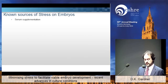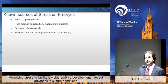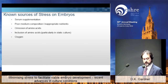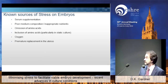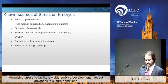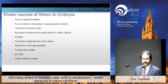What are the known sources of stress? There are several. Serum supplementation — which I hope no one is doing these days. Poor medium composition with inappropriate nutrients. The omission of amino acids, the inclusion of amino acids — that's a bit of a paradox, which I'll come back to. Oxygen — the very gas that gives us life — is the one that ultimately kills us, and if we use the wrong concentration, it really damages our embryos. I would even advocate that premature replacement of an embryo in the uterus, putting a cleavage stage embryo back in the uterine environment, is a stress well documented in animal models. The shear force through pipetting, temperature shifts, pH shifts, and growing embryos on their own — these are all possible sources of stress.